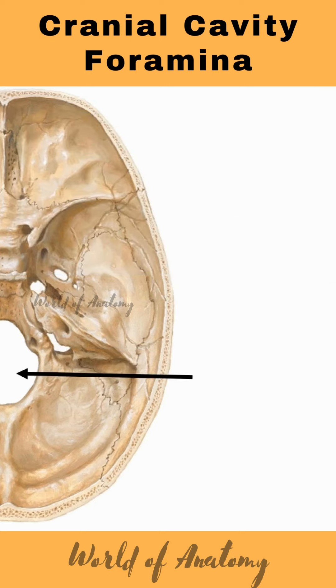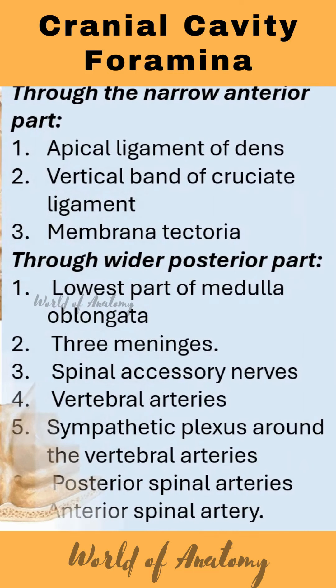Lastly, the largest foramen of the skull — the foramen magnum. Through the narrow anterior part: the apical ligament of dens, the vertical band of the cruciate ligament, and membrana tectoria. Through the wider posterior part: the lowest part of the medulla oblongata with three meninges, spinal accessory nerve, vertebral arteries, sympathetic plexuses around the vertebral arteries, posterior spinal arteries, and the anterior spinal artery. These are the major foramina of the skull.